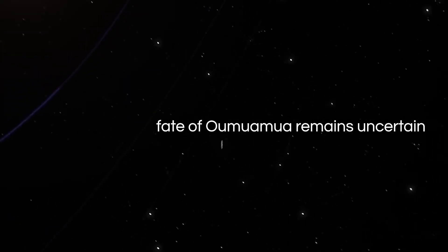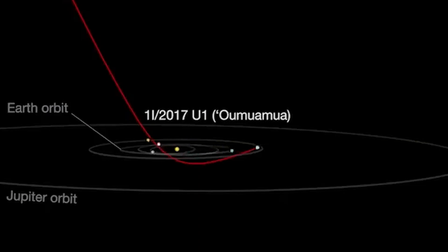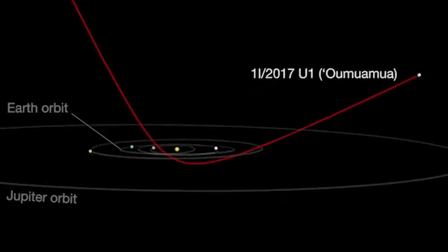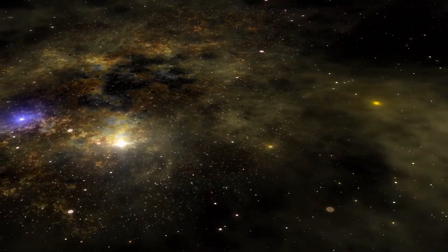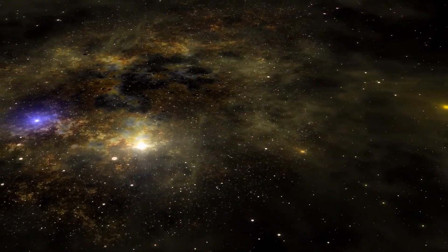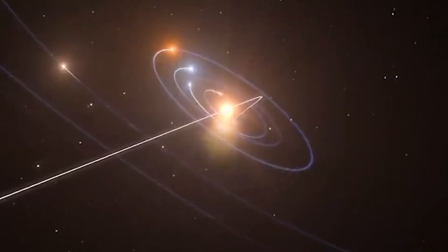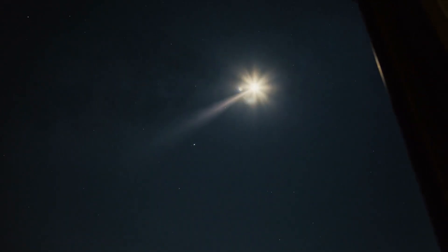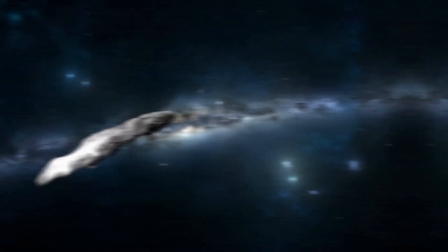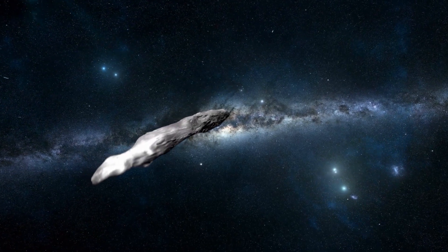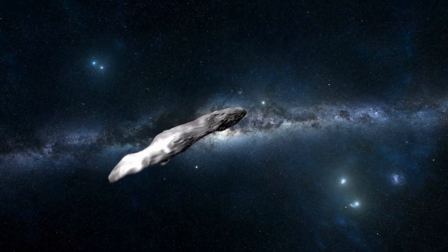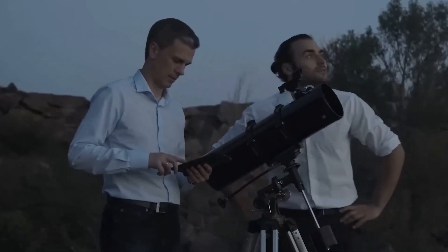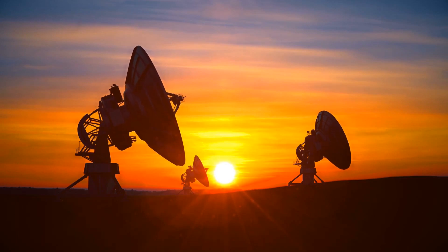The fate of Oumuamua remains uncertain as it follows a trajectory that will carry it out of our solar system and back into the vastness of interstellar space. While there is a slim possibility that it may re-enter our solar system in the future, or encounter another star system, it is more likely that this enigmatic object will disappear from our view, leaving us with only memories and data collected during its brief passage.